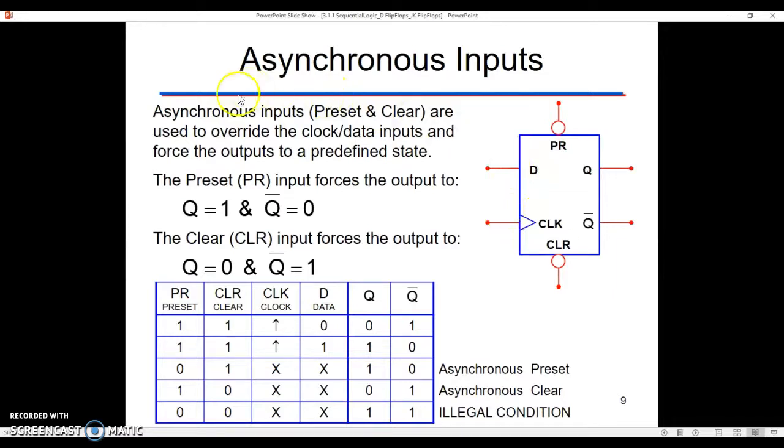So what the truth table says is this. Notice that there are bubbles here. The bubbles here mean that we have active low inputs. In this particular situation, not every flip-flop is active low, but the one on the screen right now is. And what that means is that if I ever send a 0 into it, the bubble indicates a not, right? So if I ever send a 0 into this, I activate preset.